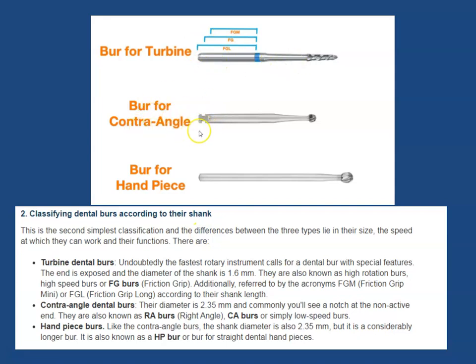Another type of shank classification is based on the contra-angle. The contra-angle dental burr has a diameter of around 2.35 millimeters and is used for right-angle handpieces and low-speed handpieces. The last shank classification covers burrs for the straight nose cone handpiece, which are quite long.